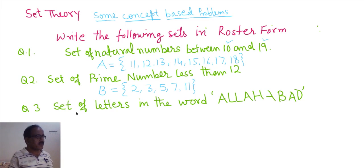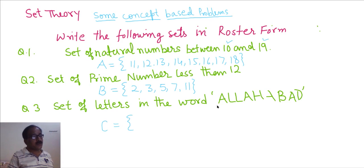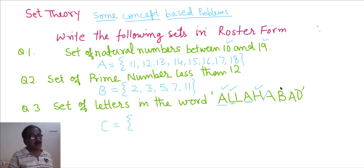Now we will see question number 3: set of letters in the word 'Alhawad'. Suppose this set is C. In 'Alhawad' we have A, L — again L appears, but we should not write L a second time. Same condition for A — we should not write A again. So A is the element of set C, then L, H, B, and finally D.